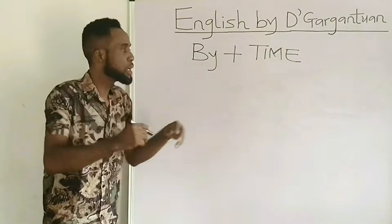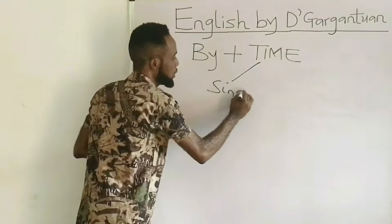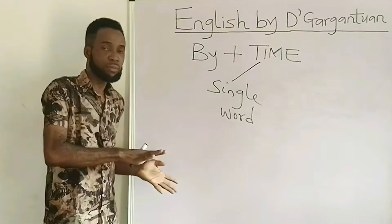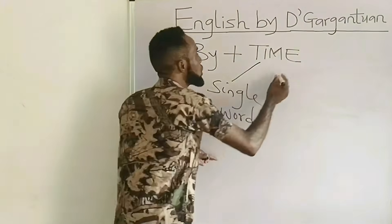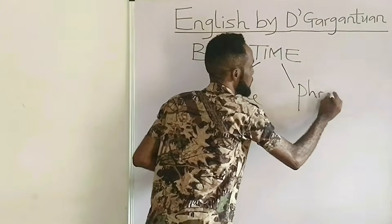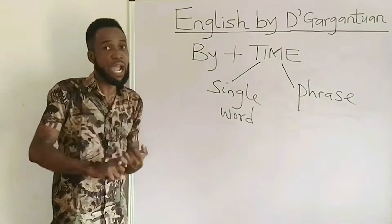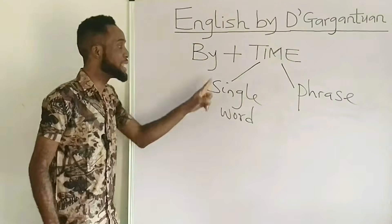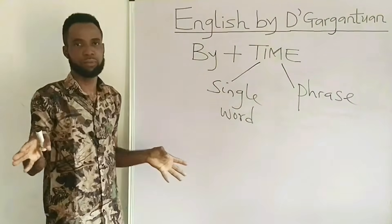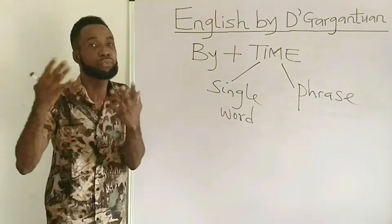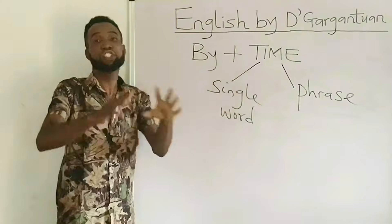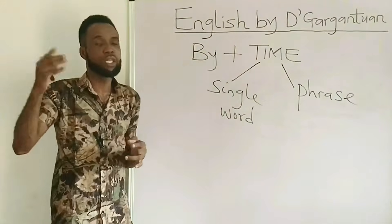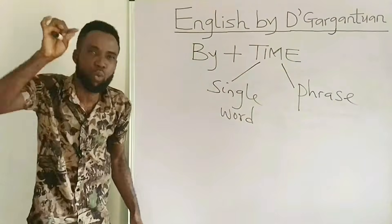You will know that a question is from the topic real and unreal future if it contains a prepositional phrase that begins with 'by' plus time. Time here can come as a single word — for example, January, February, etc. — or as a phrase, for example, 'this time next year' or 'the end of this month.' Whether time comes as a single word or as a phrase, it doesn't matter. Since the question contains 'by' plus time, it is from real and unreal future.